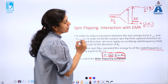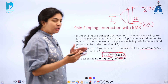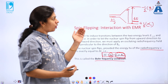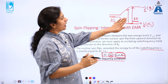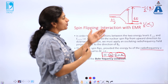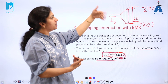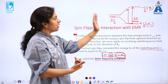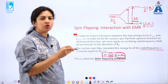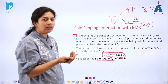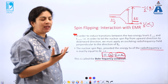Once energy from the radio frequency region is absorbed, the nucleus in the alpha spin state undergoes spin flipping — it goes into the higher energy beta spin state. This absorption is recorded by the instrument as a signal, and we get the signal corresponding to any NMR-active nucleus.